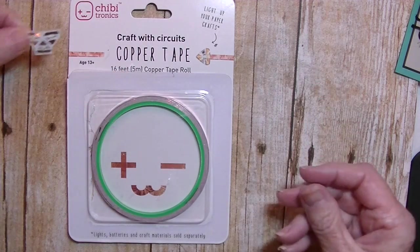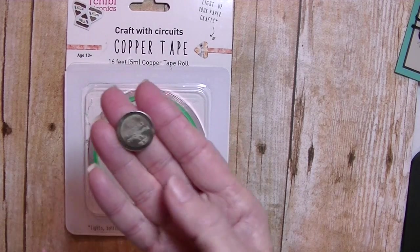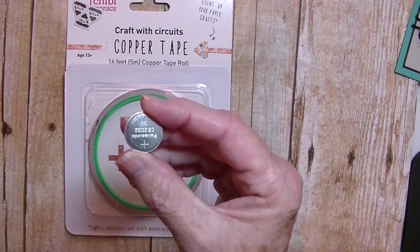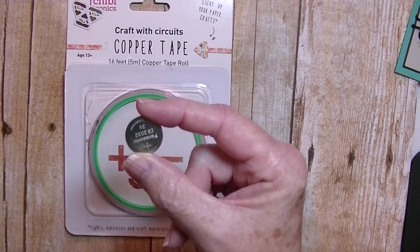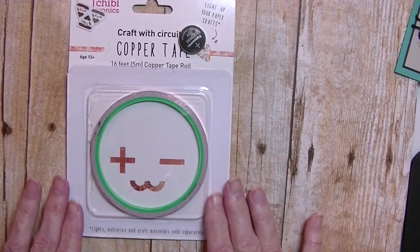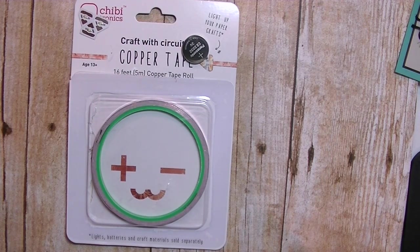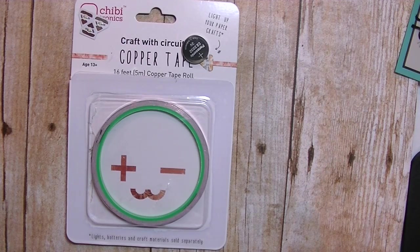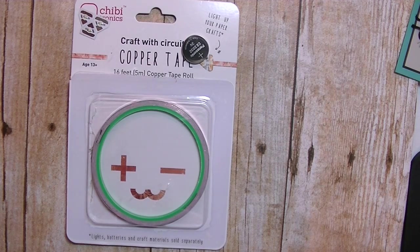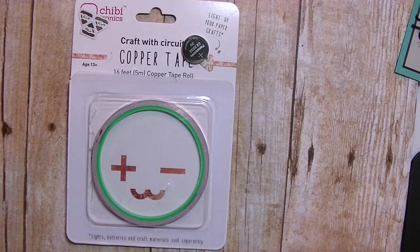And to make that light in your circuit, you'll add a little three volt coin battery that I also purchased from Chibitronics. These are the additional items that you'll need to add just a little bit of really fun light to your cards, scrapbooks, and maybe to your stamping. Let's get started.